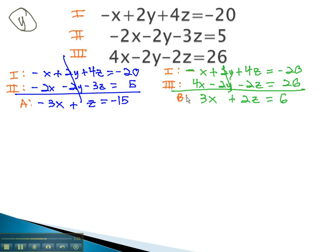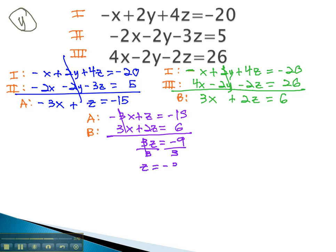This is now our equation b, and we can solve the system a and b, two equations with two variables, just like we always have. a is negative 3x plus z equals negative 15. b is 3x plus 2z equals 6. Notice we already have opposites in front of the x's. We're left with 3z equals negative 9. Dividing by 3, we find out z is equal to negative 3.